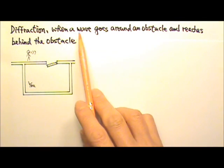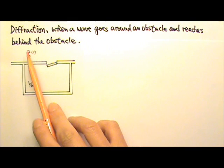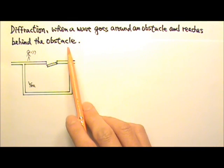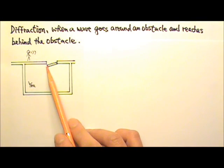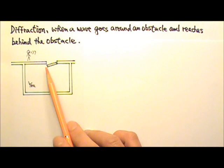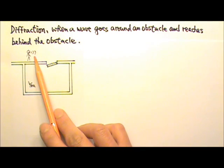Diffraction happens when a wave goes around an obstacle and reaches behind the obstacle. Diffraction is the reason why if you are in a well insulated room with a heavy door cracked open even just a little bit, you can hear people talking outside the room.